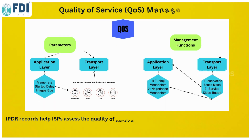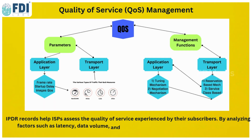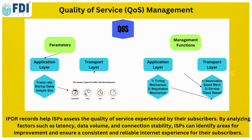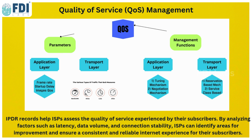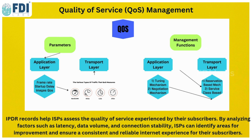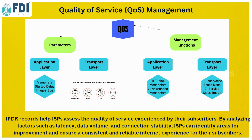IPDR records serve as an ISP's report card, allowing them to assess how well they are meeting consumer needs. ISPs can determine where they need to make improvements by examining factors like the speed of the internet connection, the amount of data used, and whether the connection remains steady. This contributes to ensuring that all users always have a dependable internet experience, which is crucial for maintaining consumer satisfaction.